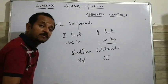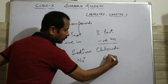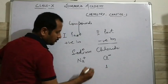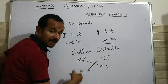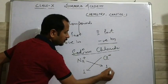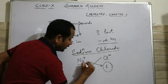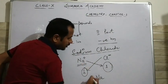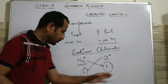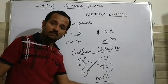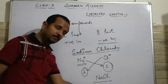So how do I frame the formula of sodium chloride? What is the valency of sodium ion here? 1. What is the valency of chloride? 1. Now we will mark these arrows. They tell that the formula of sodium chloride is having 1 ion of sodium and 1 ion of chloride.